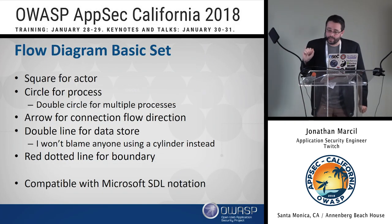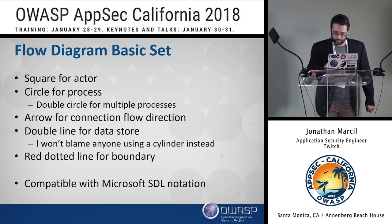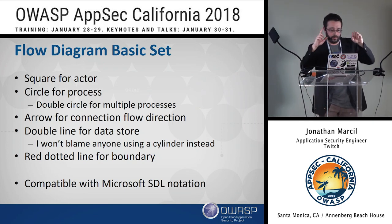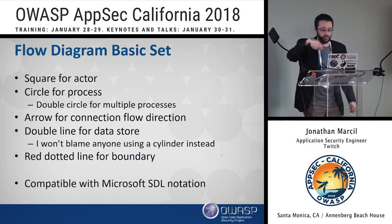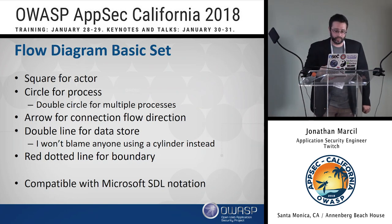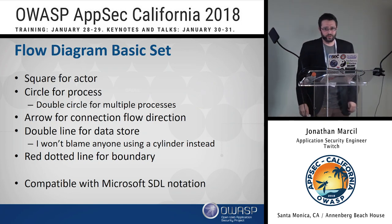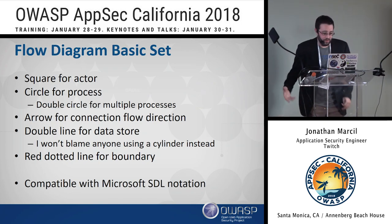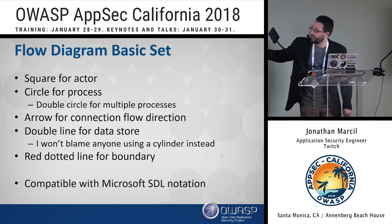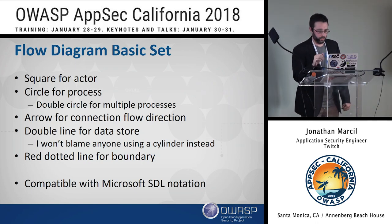Here are the basic steps — don't worry, we'll go through examples step by step. There's a square for actor, a circle for process, a double circle for multiple processes, an arrow for connection flow, a double line for the data store. There's a red dotted line for boundaries or any frontier. This is all Microsoft SDL notation.